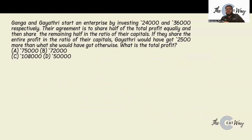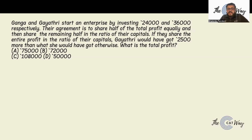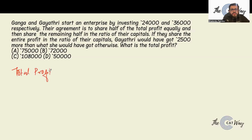Next: Ganga and Gayatri start an enterprise investing 24,000 and 36,000 respectively. Their agreement is to share half the total profit equally and share the remaining half in the ratio of their capitals. If the entire profit were shared in ratio of capitals, Gayatri would have got 2,500 more. What is the total profit? Let's assume total profit is 100x.